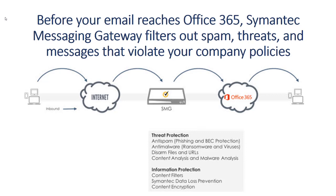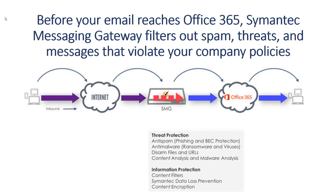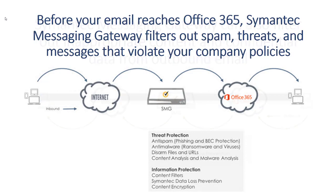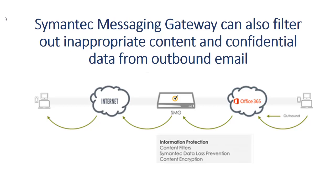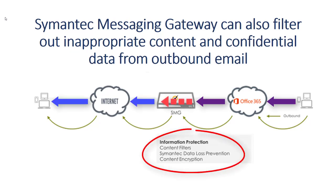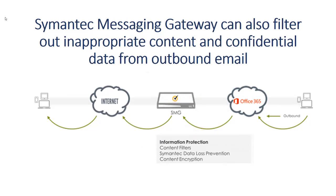Semantic Messaging Gateway uses your existing policies to filter your inbound mail, eliminating spam, malware, advanced threats, and unacceptable content, and then sends the filtered mail to Office 365 for delivery. Semantic Messaging Gateway can also scan your outbound mail from Office 365, applying policies and filters to make sure outgoing mail does not violate your company's standards and that your confidential information remains confidential. We'll set up protection for outbound mail in another video.